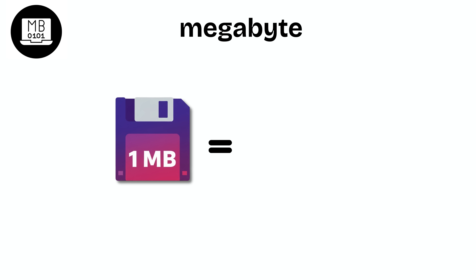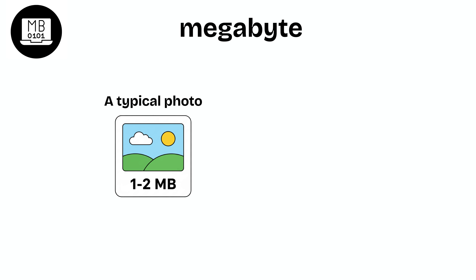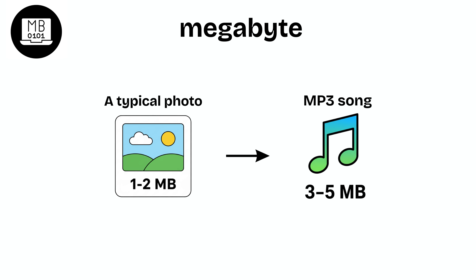Megabyte (MB). A megabyte is 1024 kilobytes, about 1 million bytes. A typical photo is 1 to 2 megabytes, and a 3-minute MP3 song takes around 3 to 5 megabytes.